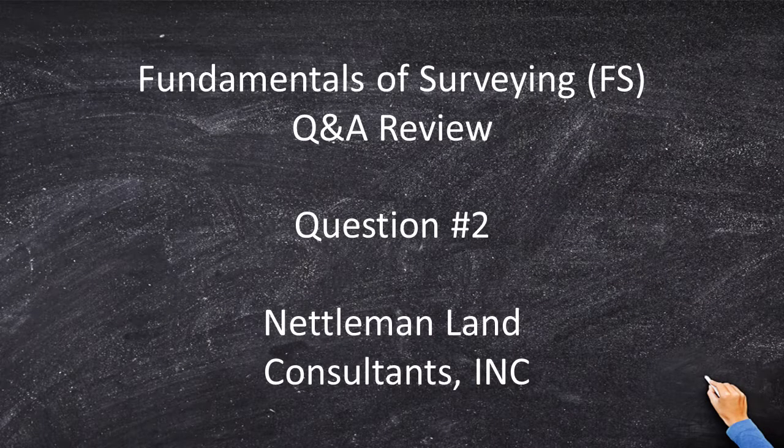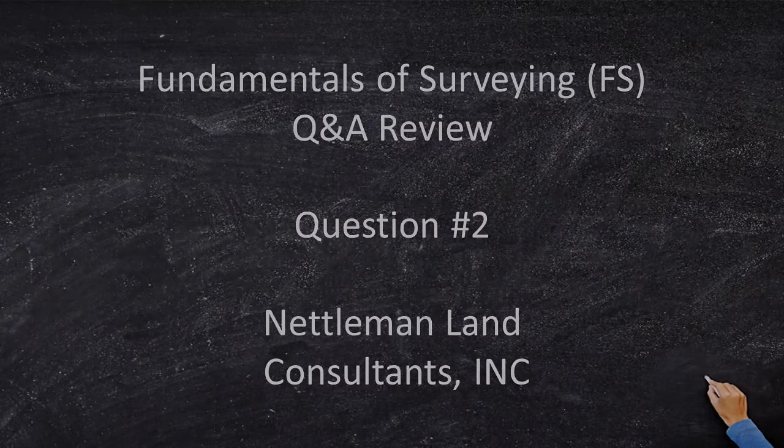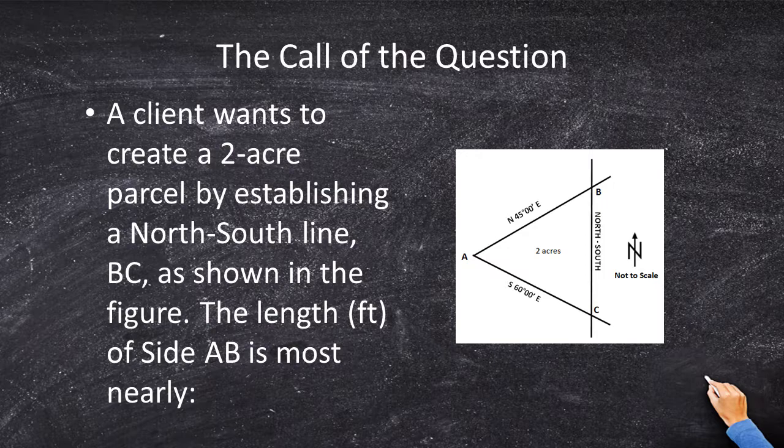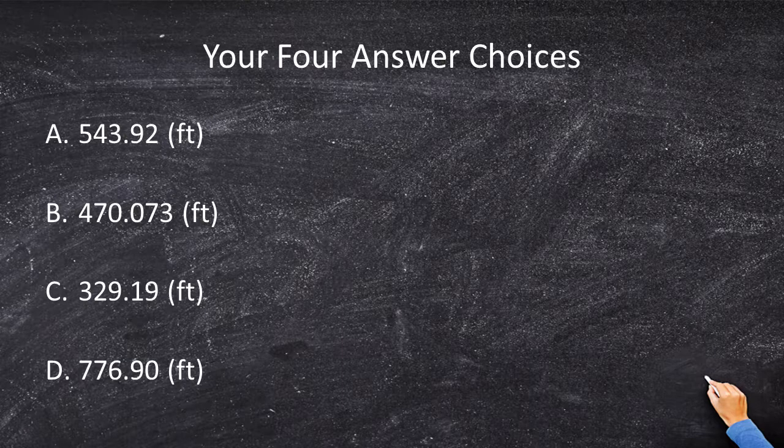Welcome to the Fundamentals of Surveying Q&A review, question number two. Let's begin with the call of the question. A client wants to create a two-acre parcel by establishing a north-south line, that's BC, as shown in the figure. The length of side AB is most nearly which of the following? A, B, C, or D?